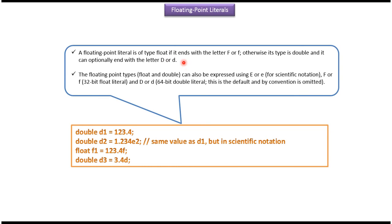Floating point literal is a type of float if it ends with letter F. And floating point literal is a type of double if it ends with letter D. And if a floating point literal does not end with F or D, then it is also a type of double. Floating point types can also be expressed using exponential notation, that is called scientific notation.